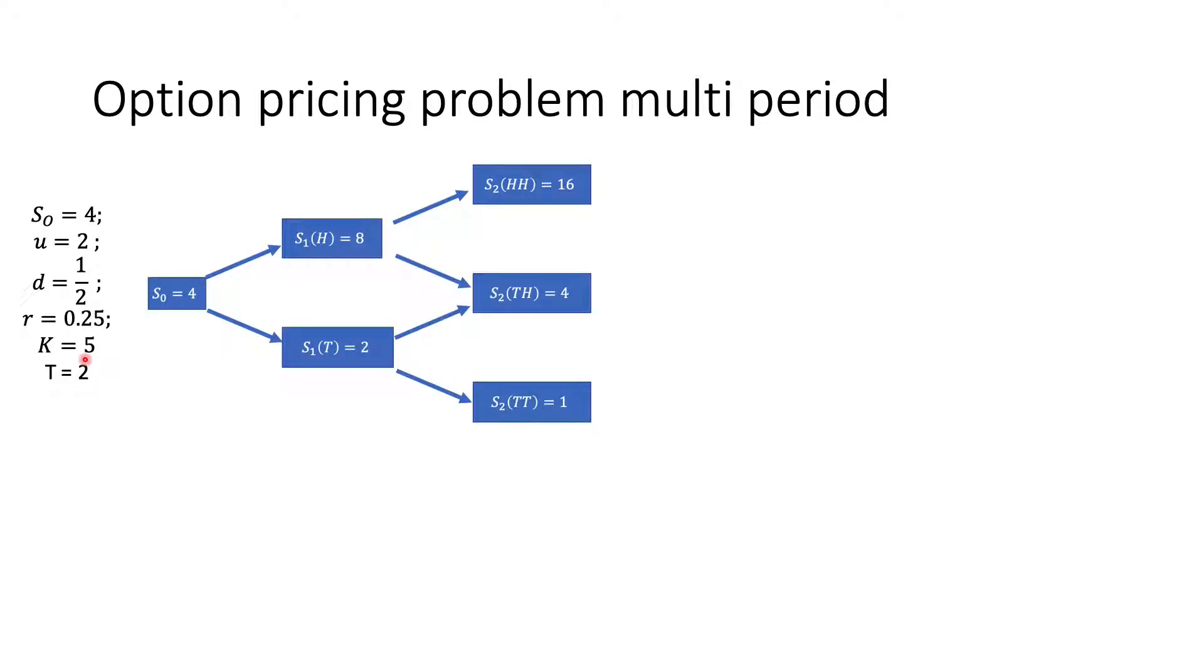Let's look at the option pricing problem here. Suppose we have these parameters: the stock price today is S0 = 4, the up factor u = 2, down factor d = 1.5, interest rate R = 0.25, strike price K = 5, and T = 2. We have a European call option with a strike price of 5, and we can exercise the call option 2 periods from now. So we're looking at a 2-period binomial model. I have built the tree here for us to see. This is the one-period, but now we keep tossing the coin so it can go up to 2 times 8, which is 16. These are the other values depending on the outcome of the coin toss.